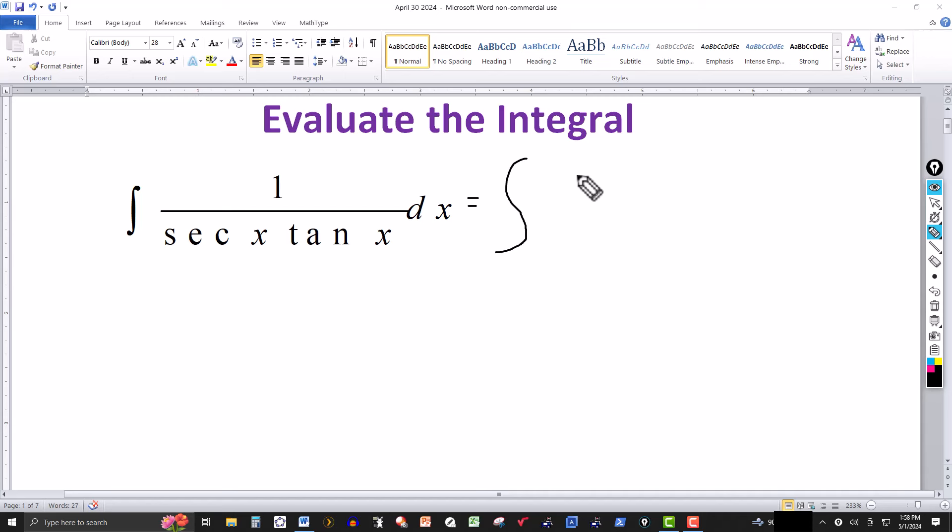Let me break this up this way. This is what you should always do if you don't see what method or technique to use. You're working with trig functions, so try to rewrite it or simplify it if possible. I just rewrote it so 1 over secant of x times 1 over tangent of x is the same thing that we have for this integrand.